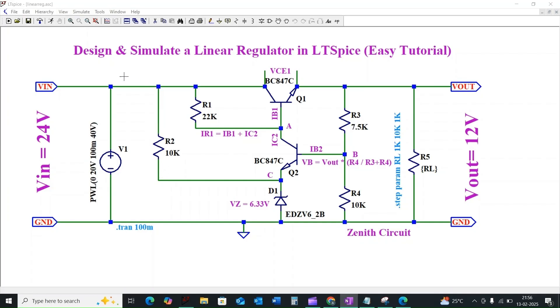Here resistors R3 and R4 form a feedback network to maintain output regulation. R3 and R4 play an important role in the linear regulation.